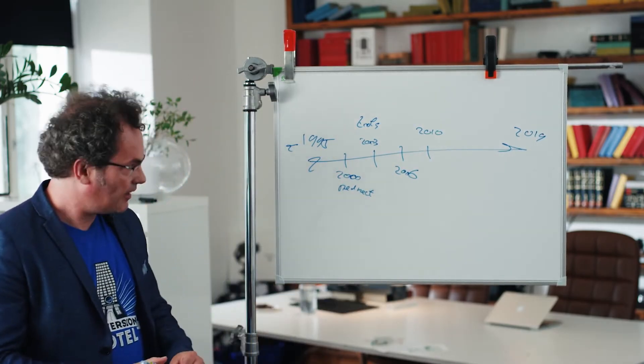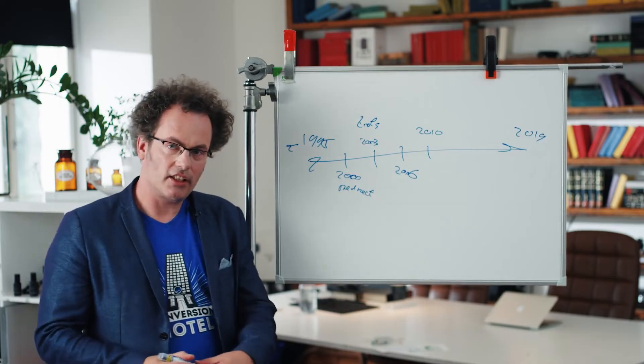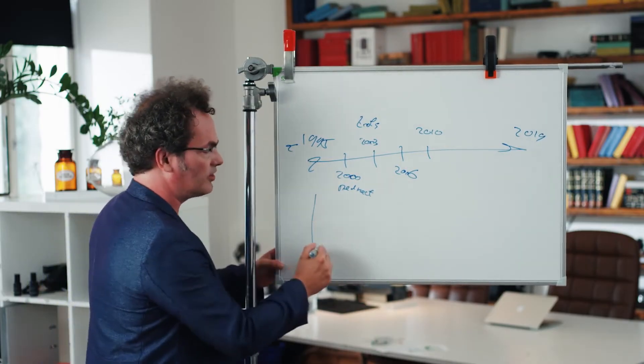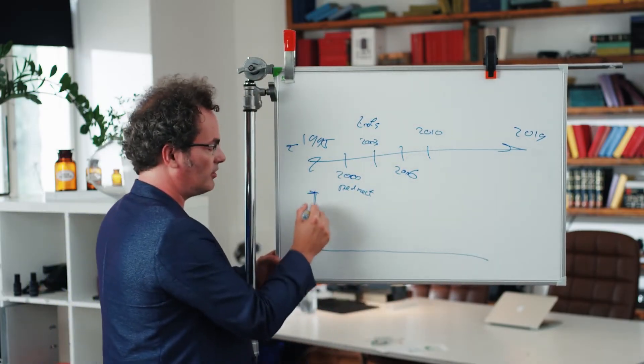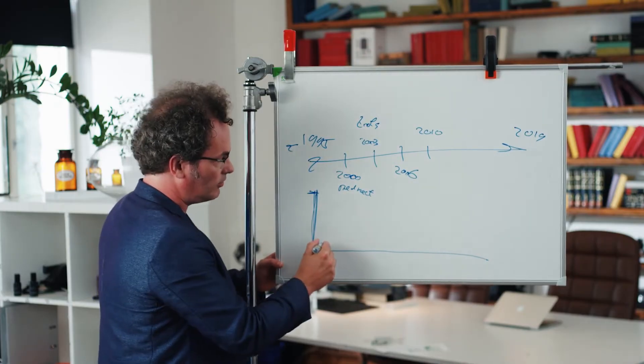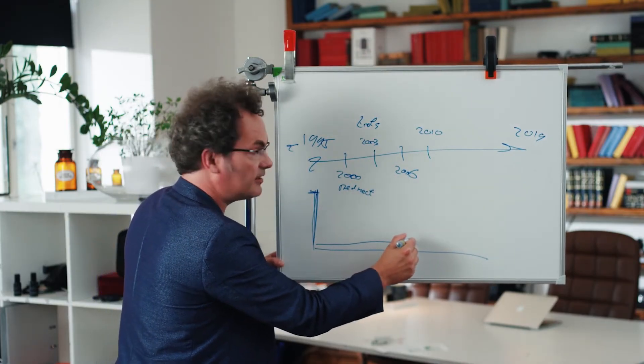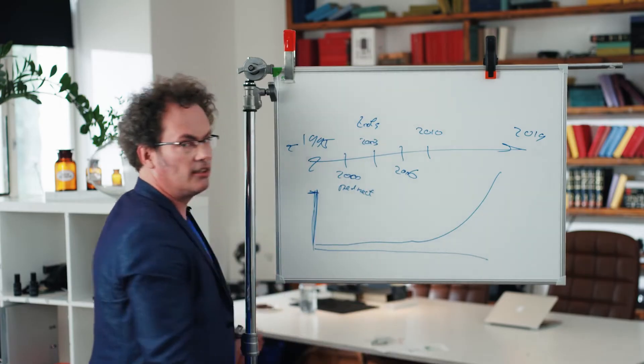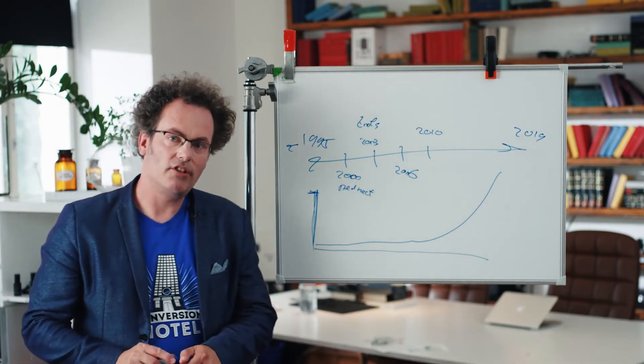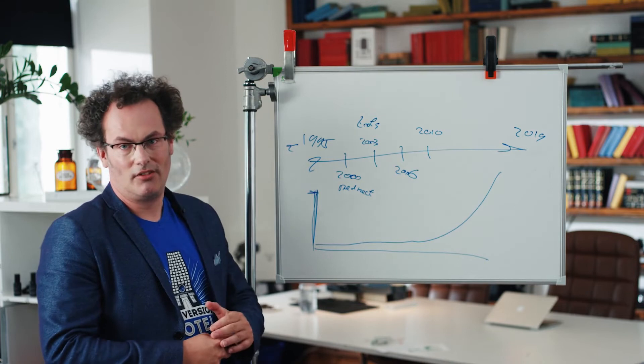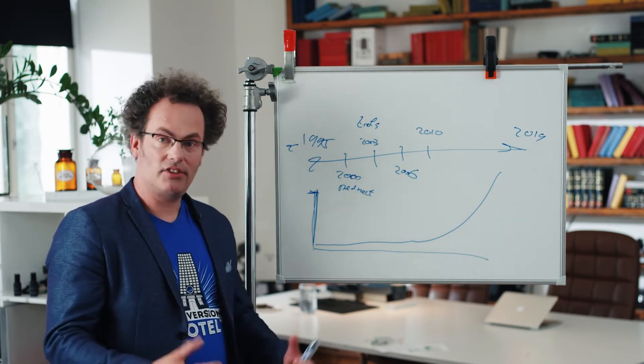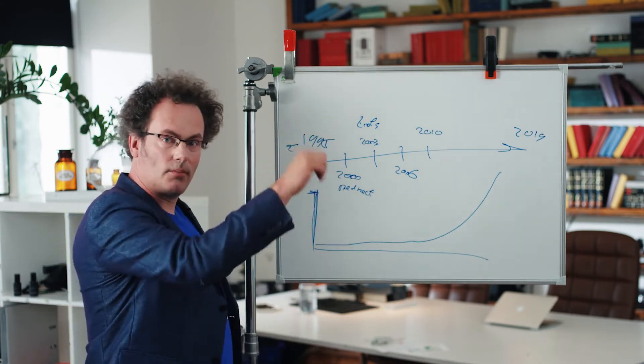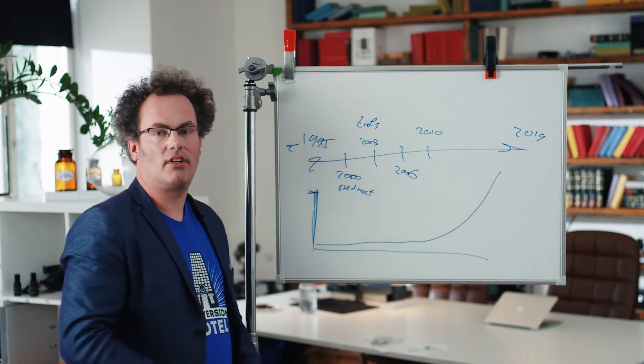And then 2010, I think the most important year in running experiments. Because if you look on timescale and the number of experiments being run, it goes up something like this. But then in 2010, this happens. VWO and Optimizely came to the marketplace. They created a drag-and-drop solution for A-B testing. So every macro tier could just log on, drag-and-drop something, press start, and run the experiment.